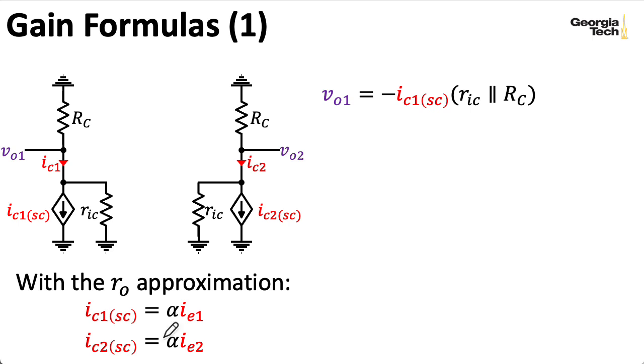Now, one thing that's a little complicated with using Marshall's models is that it's not the case that you get IC1 as in this current here by multiplying IE1 by alpha.